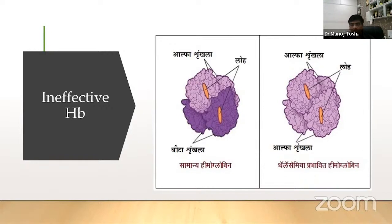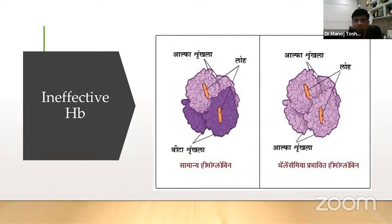Just because we don't know our thalassemia status — whether we are minor or not — babies are already being born with thalassemia. Our youth, our doctors, our medical fraternity, our entire population needs to be aware about this disease. In the Western world, they made awareness drives and ensured thalassemia minors know their status. By doing prenatal diagnosis during pregnancy, they have reduced the incidence of beta thalassemia to almost zero.